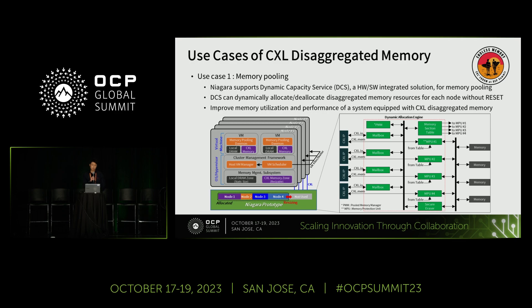On the hardware side, the Pooled Memory Manager, or PMM, communicates with the host using a mailbox to allocate or deallocate CXL memory regions based on host requests. When memory regions are allocated to a specific host, the PMM updates the host ID and ownership information in the memory section table. The Memory Protection Unit, or MPU, can then detect and drop unauthorized CXL.mem traffic to specific memory regions. We also have a secure erasure function that can zeroing or randomize specific memory regions for security purposes.